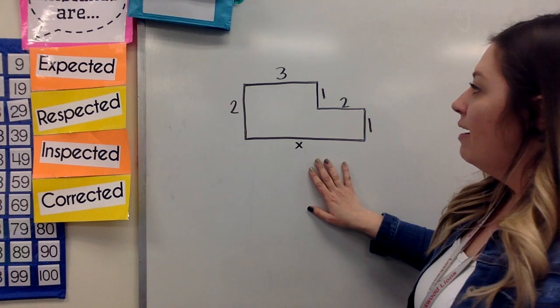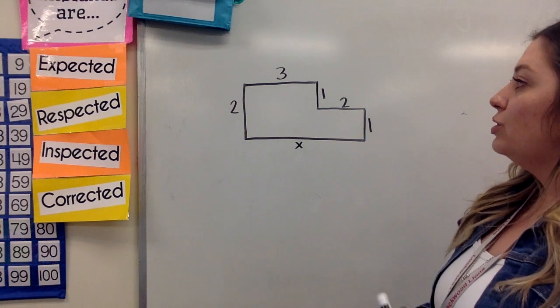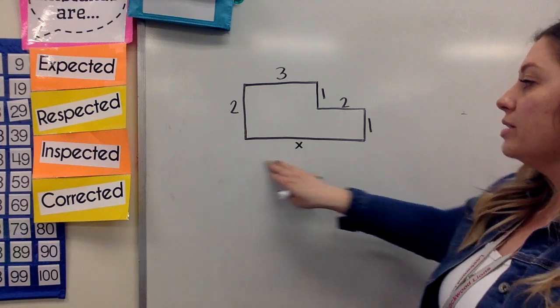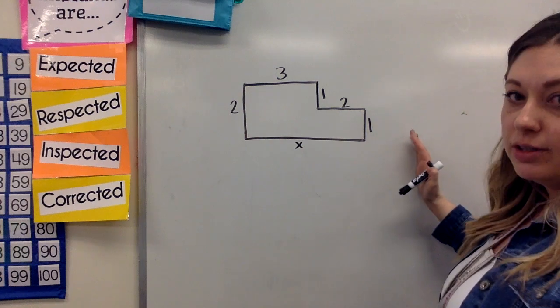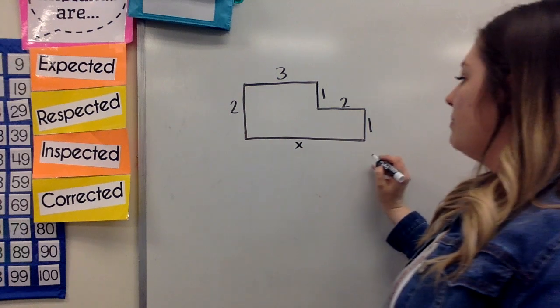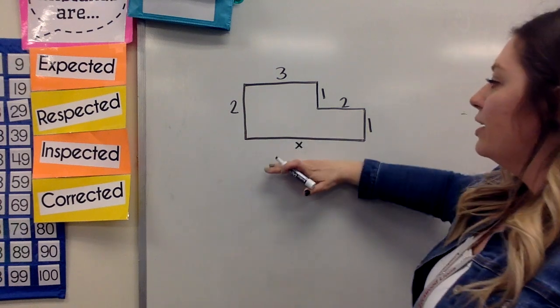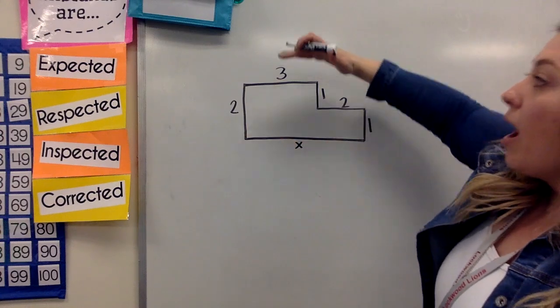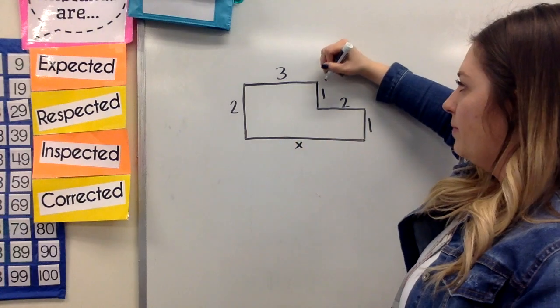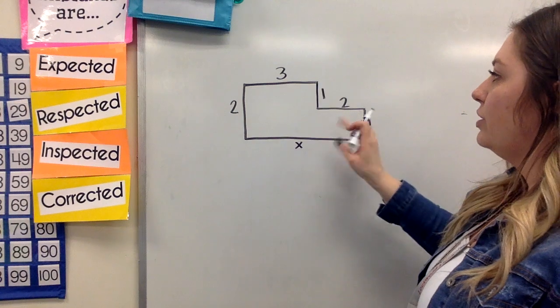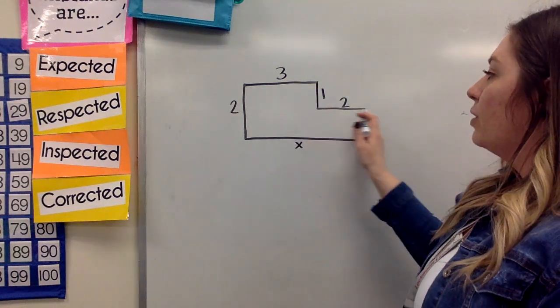So when we come to this, I am going to look and see if it's a horizontal side or if it's a vertical side. Now I see that it's my horizontal side, so I'm going to look at the side opposite it. And if you see that I have a three and a two, these are both my horizontal sides.